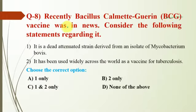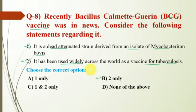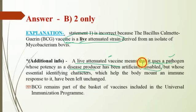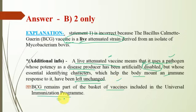Question number 8: BCG vaccine was recently in the news. Statement 1: It is a dead attenuated strain derived from an isolate of Mycobacterium bovis. Statement 2: It has been used widely across the world as a vaccine for tuberculosis. Statement 1 is incorrect — it is a live attenuated strain, not a dead one. A live attenuated vaccine uses a pathogen whose potency as a disease producer has been artificially disabled, but whose identifying characters that help the body mount an immune response remain unchanged. BCG remains part of the Universal Immunization Programme.